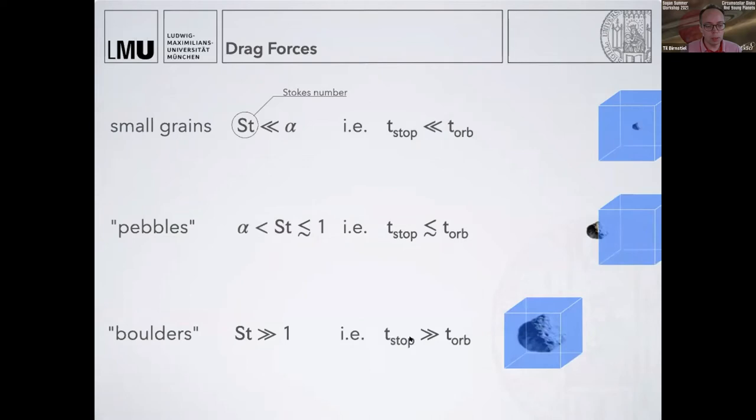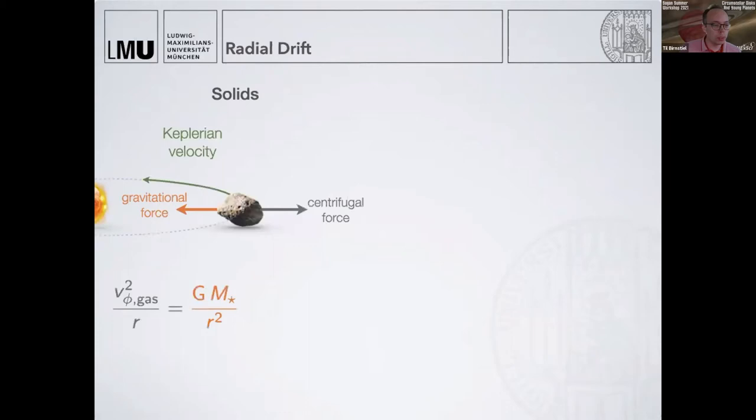If we go to very large ones, you might call them boulders, a large size means large Stokes number. They're basically not really coupling to the gas. If you move the gas, this body doesn't really care. One of the important consequences of these drag forces is called radial drift.